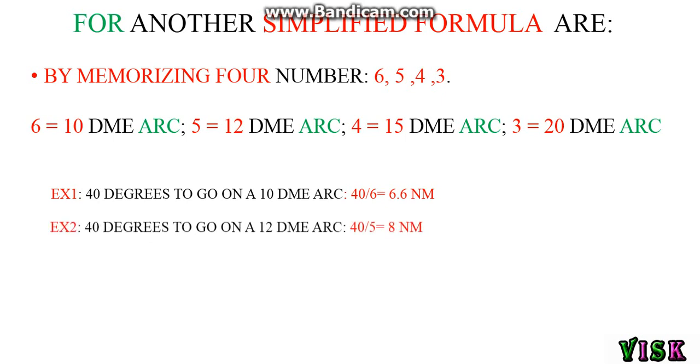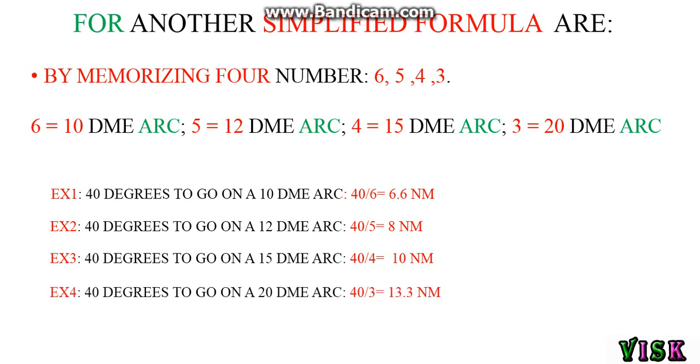Example number two: 40 degrees to go on 12 DME equals 40 divided by 5 equals 8 nautical miles. Example number three: 40 degrees to go on 15 DME equals 40 divided by 4, because 4 refers to 15, equals 10 nautical miles. The last example: 40 degrees to go on 20 DME equals 40 divided by 3 equals 13.3 nautical miles.